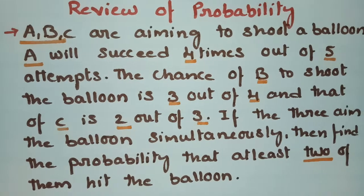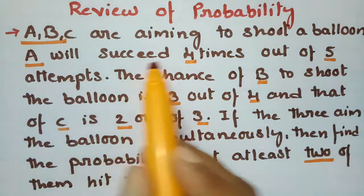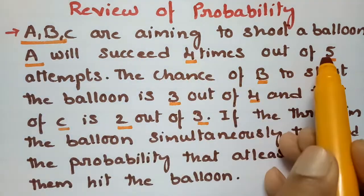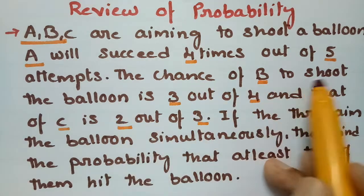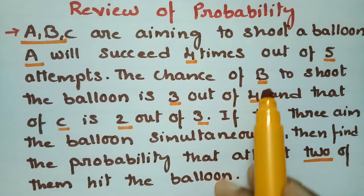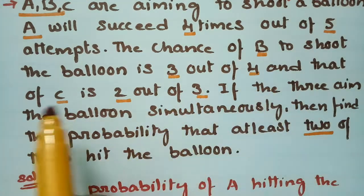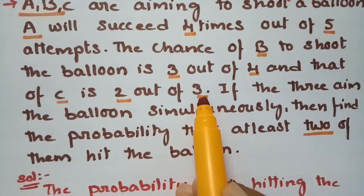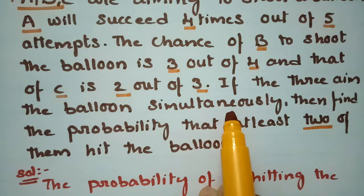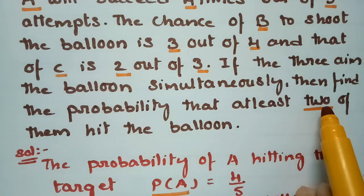This problem from probability: A, B, and C are aiming to shoot a balloon. A will succeed 4 times out of 5, so the probability for A to hit the balloon is 4/5. The probability for B to hit the balloon is 3/4, and that of C is 2/3. If all three aim at the balloon simultaneously, find the probability that at least 2 of them hit the balloon.